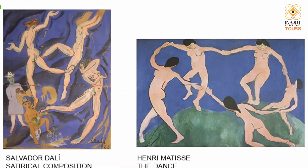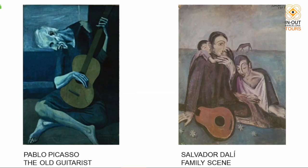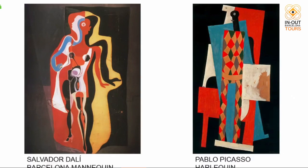We say Dalí was 'inspired' by these artists — because if I had painted something so similar, people would say I was copying. One of these paintings is Picasso, the other is Dalí. The right one is Dalí, the left one is Picasso — 'The Old Guitarist' by Pablo Picasso, and on the right a very similar work by Dalí. Another pair: on the left is Picasso's 'Harlequin,' and on the right is Dalí's 'Barcelona Mannequin.' These are all paintings from his youth in the 1920s.